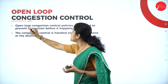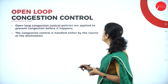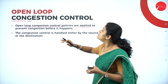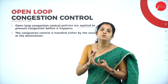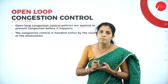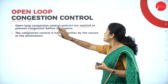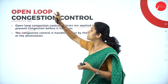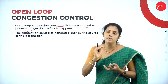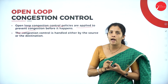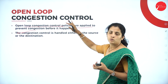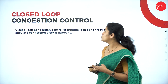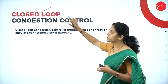In open loop congestion control, it is a policy or mechanism applied to prevent congestion before it happens. That means before congestion occurs, you are going to take some precautions or measurements. The congestion control is handled either by the source or destination machine. In closed loop congestion control, the mechanism is used to treat congestion after it has happened.